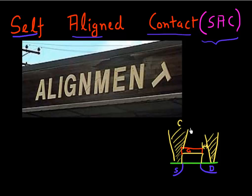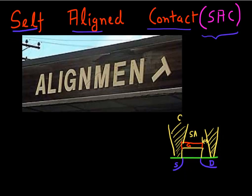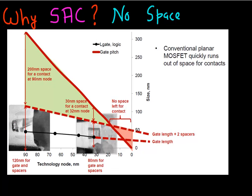So why do we need this? There are two reasons. One thing driving the need for self-aligned contacts is the taskmaster called Moore's Law. It essentially requires that we keep reducing gate pitch by a very aggressive amount — cutting it in half in every technological generation.